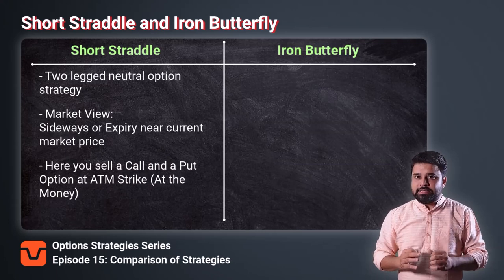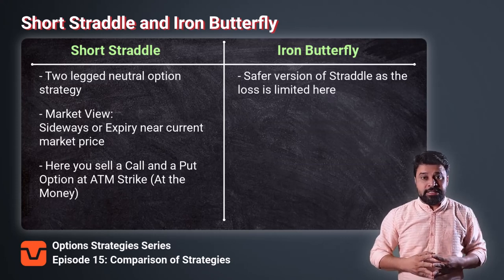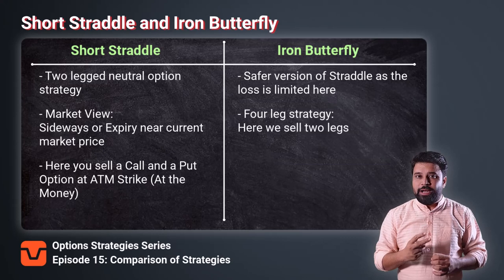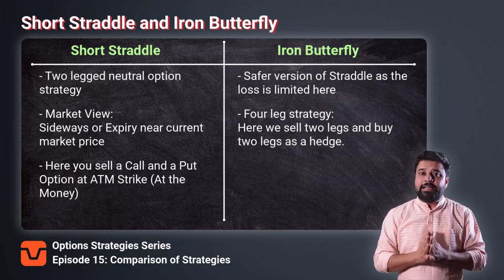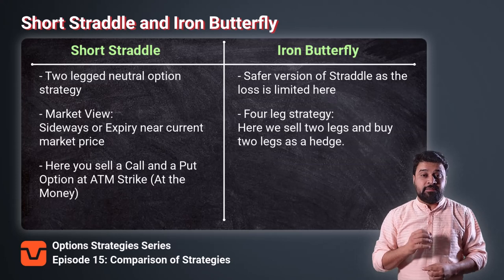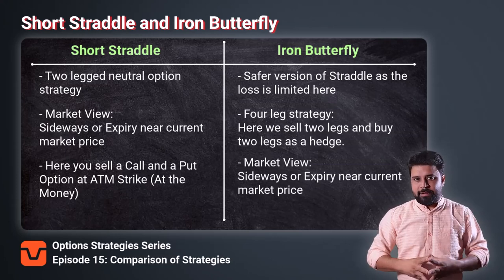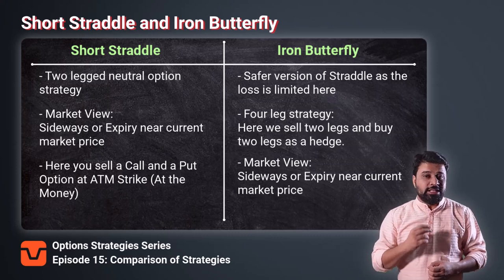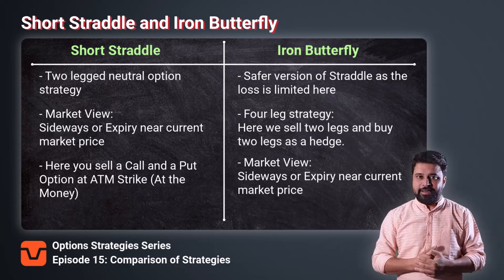The Iron Butterfly strategy is a safer version of the Short Straddle strategy, where we sell two legs and buy the remaining two legs as our hedge or protection. Just like Short Straddle, we take this strategy when we think the underlying is going to expire near the current market price. We have made detailed videos explaining both these strategies. If you haven't watched those videos, you can watch them by clicking on the i button right here.